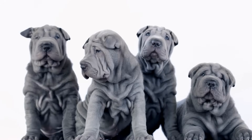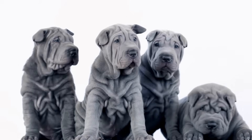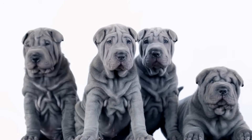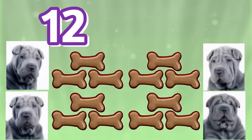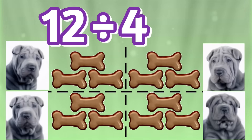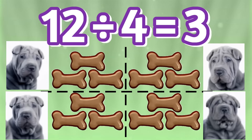Hello, doggies. Are any of you hungry? We have dog biscuits for you to share — we just want to divide them evenly so each of you gets the same amount. We have twelve dog biscuits and there are four dogs. Twelve divided by four. We have to split the twelve dog biscuits into four equal groups. What is twelve divided by four? Three. Great job. Twelve divided by four equals three. Each dog will get three dog biscuits. Three is the quotient.